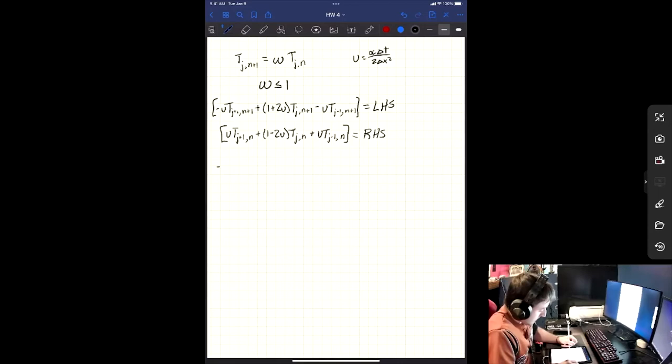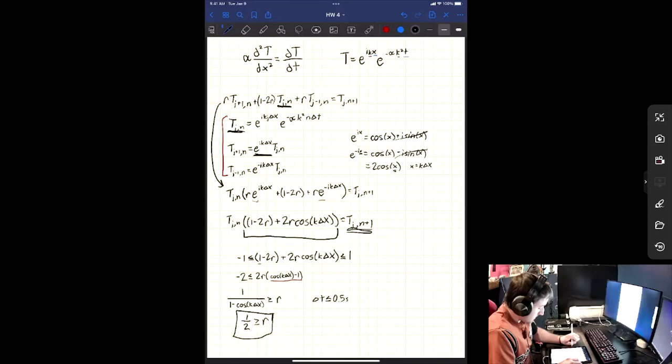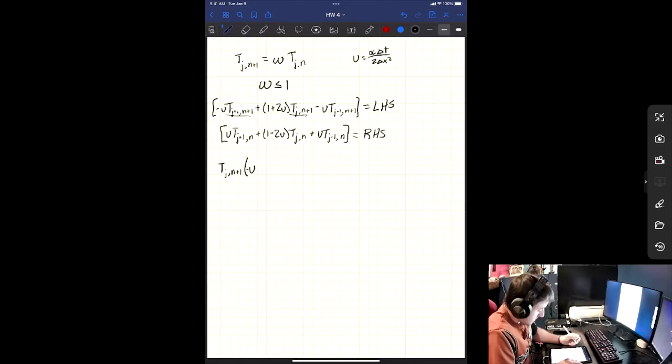So we're going to have a T j, n plus 1, and then what's in our parentheses. So here, the difference between this term and this term is simply just a j plus 1. And that is given by this relationship right here. So we can write in, we got negative u, times e to the ik delta x. And then for this middle term, it's simply just a plus 2u.